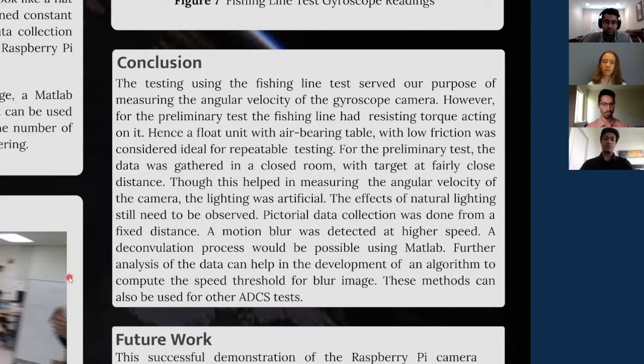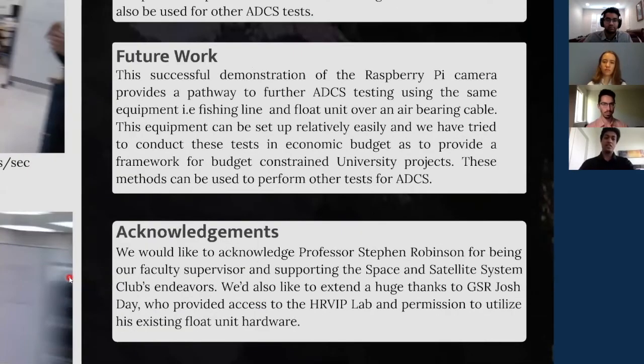This successful demonstration of Raspberry Pi camera provides a pathway for future ADCS testing using the same equipment, the fishing line and float unit over an air bearing table. This equipment can be set up relatively easily and tests can be performed on a small budget. This can provide a framework for budget-constrained university projects. These tests can also be used to perform other ADCS testing.